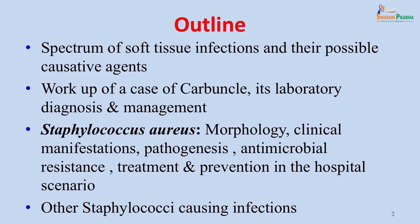The current talk will cover the spectrum of soft tissue infections and their possible causative agents. There will be a workup of a case of a carbuncle, its laboratory diagnosis and management. The common causative agent of soft tissue infections, Staphylococcus aureus, will be covered in detail — its morphology, clinical manifestations, pathogenesis, antimicrobial resistance, treatment and prevention in the hospital scenario. Other staphylococci will also be covered in brief.